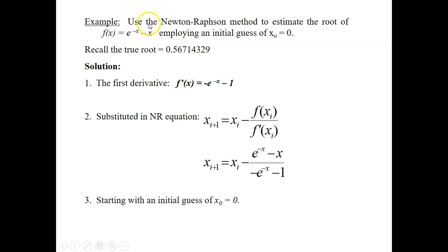Okay, let's look at one example here. Use Newton-Raphson method to estimate the root of this function employing initial guess of 0. So given here, true root. Okay, so this is just an example. So that's why they inform you what is the true, correct answer for the root. So you can actually compare your estimated root to the true value of the root. And that's why sometimes you can calculate your true error. But if you don't know your true answer, you cannot calculate your true error. You can only calculate your approximation error.